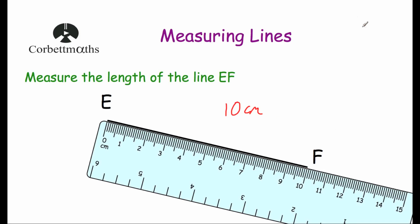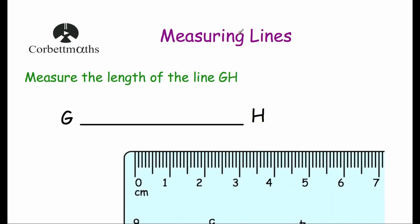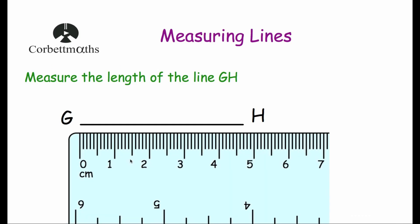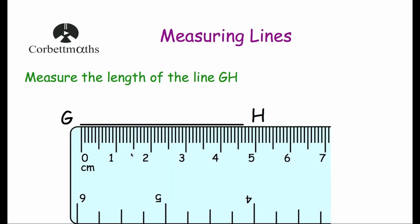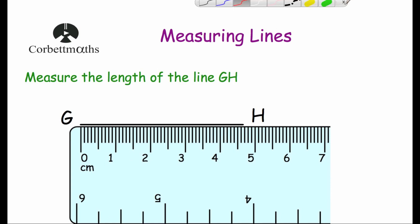Our next question: sometimes when you've been asked to measure the length of a line it won't be an exact number of centimetres — it may be a decimal. Here we've got the line CG, a horizontal line. We line up the ruler so the zero is at the beginning of the line and look where it reaches. The line goes past four centimetres but doesn't reach five, so it's going to be four point something. Counting the millimetres: one, two, three, four, five, six, seven — it reaches four point seven centimetres.